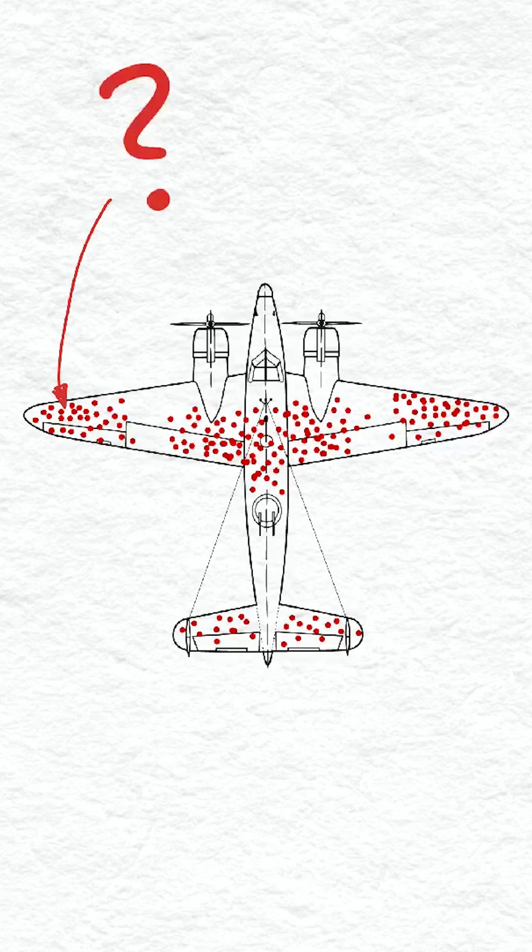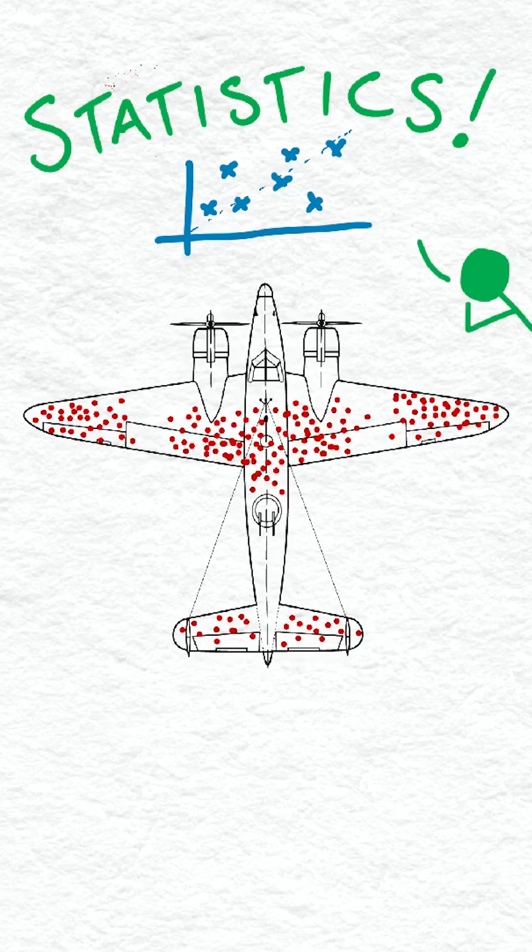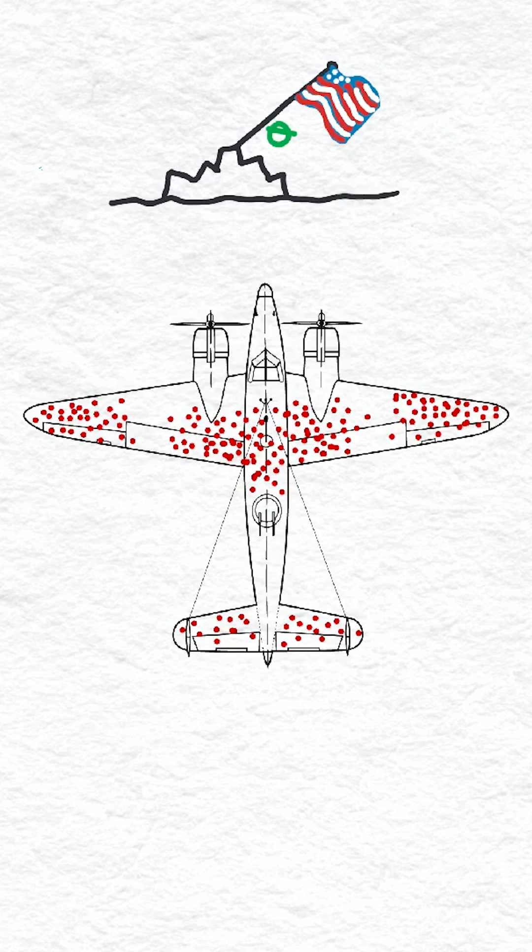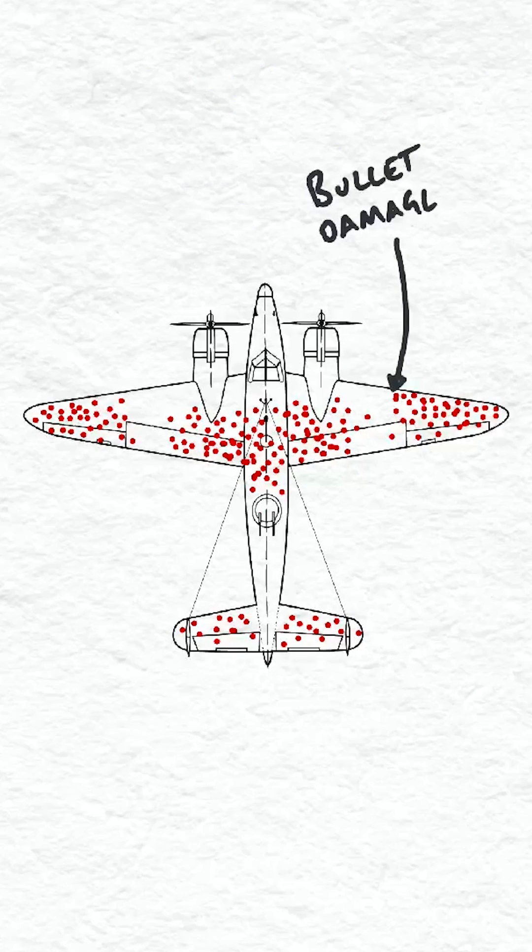Can you guess what the red dots are in this image? Statistics is often seen as boring, but in this case they helped turn the tide of World War II. They represent bullet damage data collected from all of the aircraft that returned to an airbase.